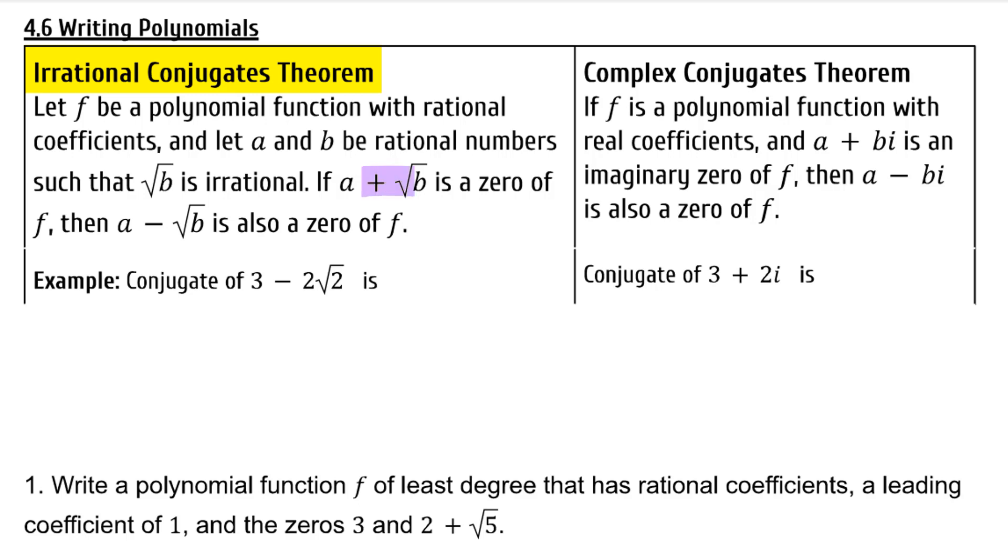Basically, if you have a positive root as a part of one of your zeros and you have rational coefficients, then you have to also have a negative root or the conjugate as a zero, because only conjugates rationalize your results.